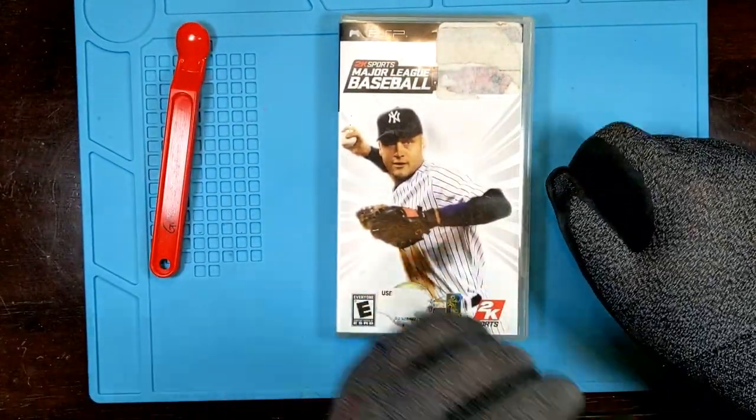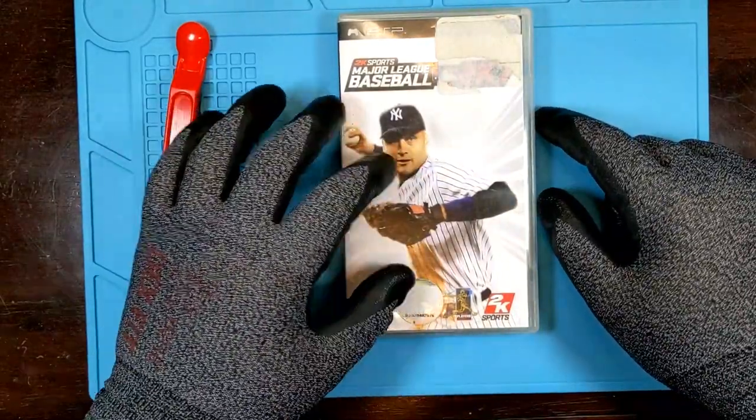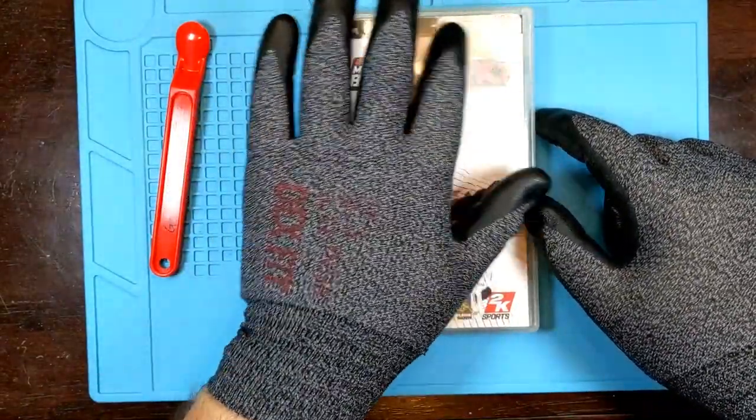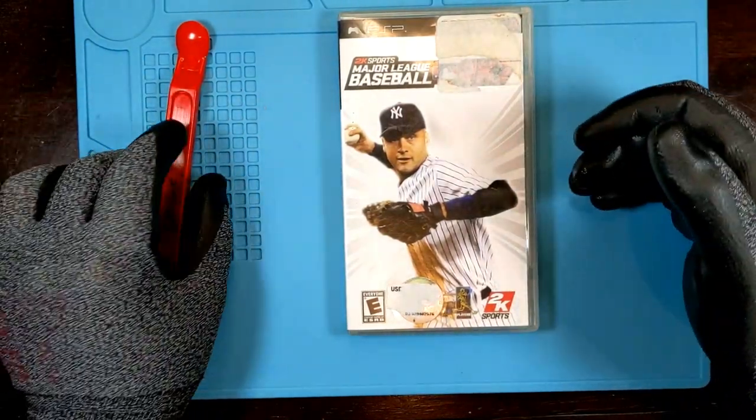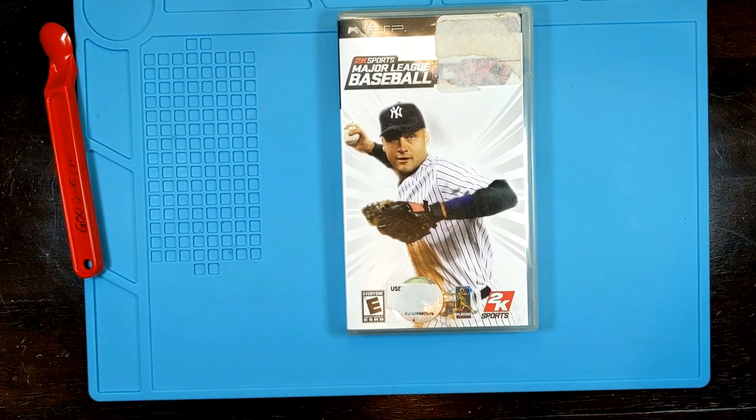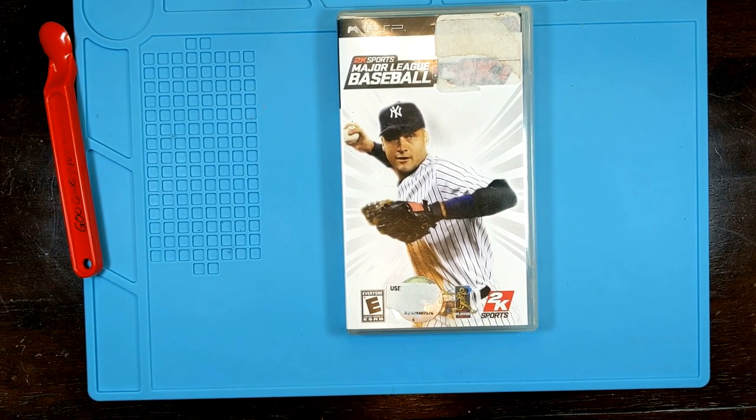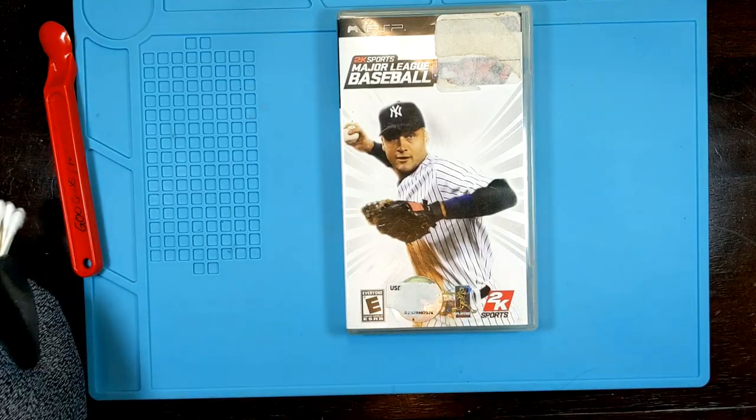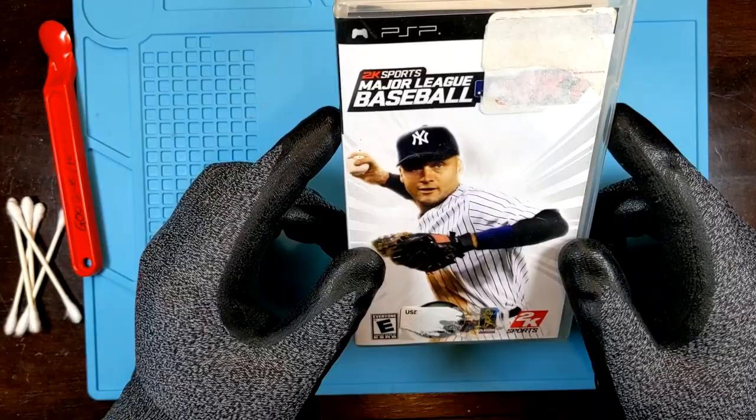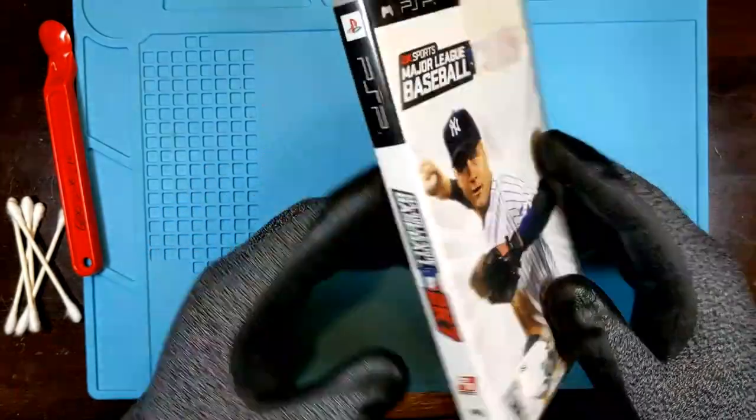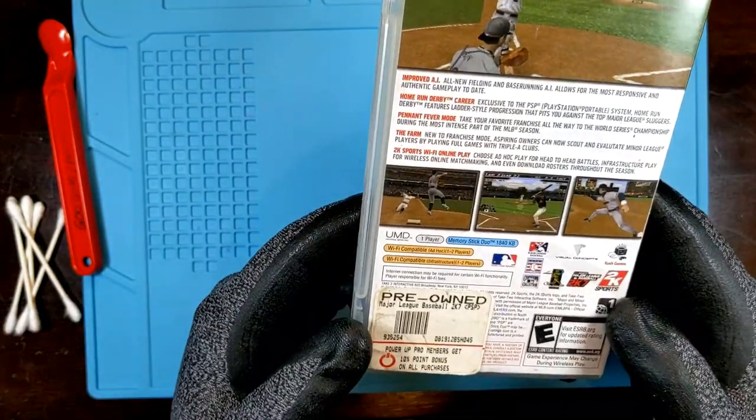It was actually kind of difficult to find a PSP case that had stickers on it. I went to a couple of different stores, and one store had like 40 different PSP games, and every single one of them was immaculate. Super weird. So we ended up with 2K Sports Major League Baseball 2K7 with the old Jeter.